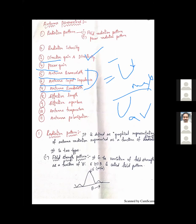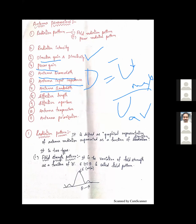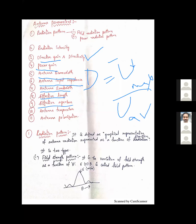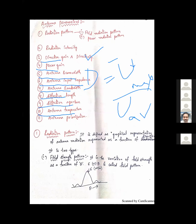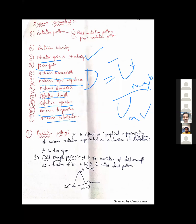We have also discussed effective length and effective area. Antenna temperature refers to the radiation suffered by an antenna due to the surrounding medium, which is equivalent to the noise temperature of the antenna. Polarization is defined as the direction of the electric field.